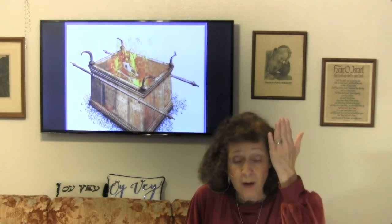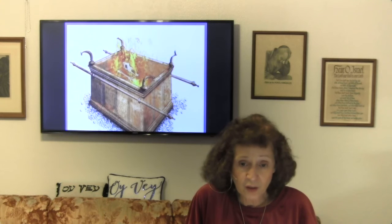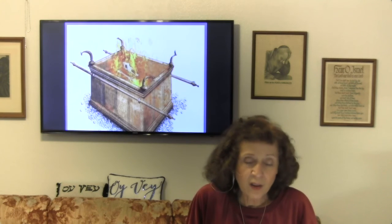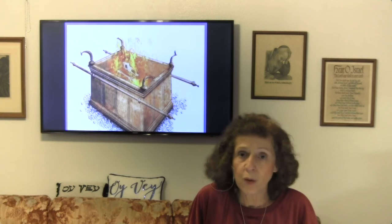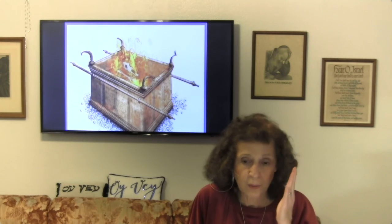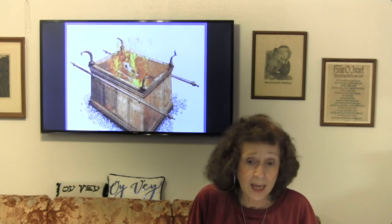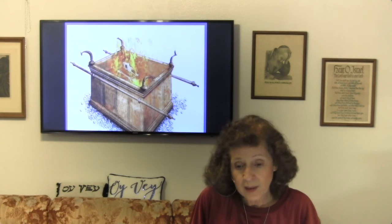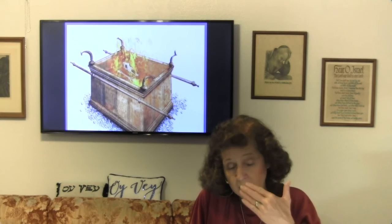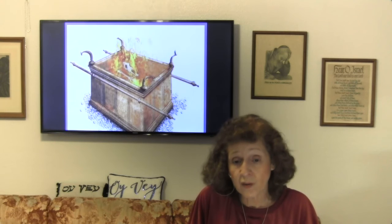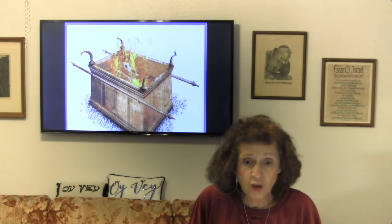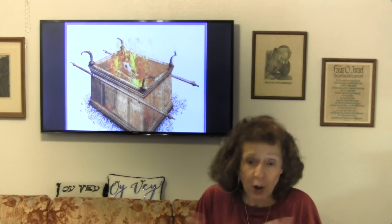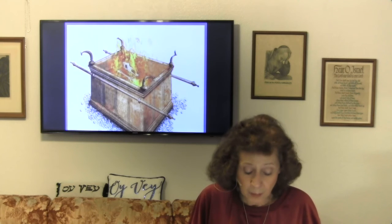The veil was rent in two from top to bottom when he died on the cross. It was wider than a man's hand and so tall that the only way it could have been divided as it was, was by the hand of God splitting it open — to show that the veil was hiding the presence of God, and now the way had been opened right into the presence of God with nothing to separate anymore.